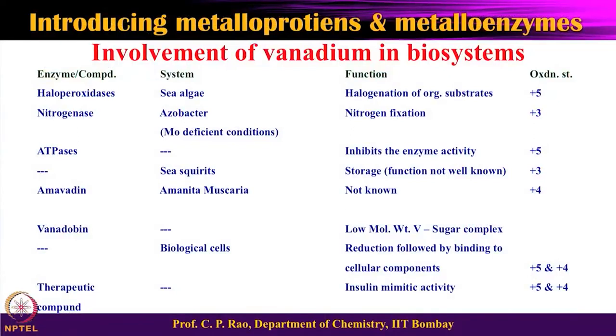Vanadium as a chemical element can show a variety of oxidation states — from +5 to -1. So it can show a large number of oxidation states, but not all are equally favored. In biological systems, the most common oxidation states are +5, +4, and +3. We will see the reasons why +2 and lower are not so common.